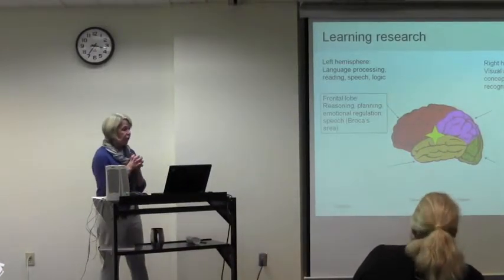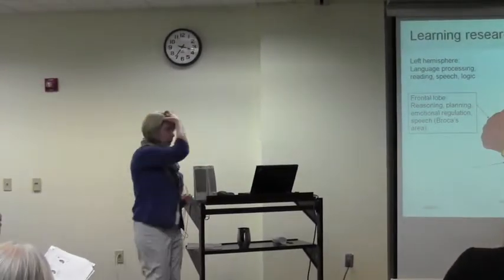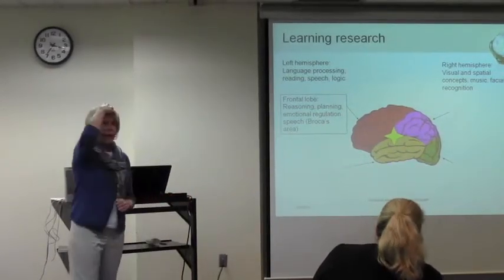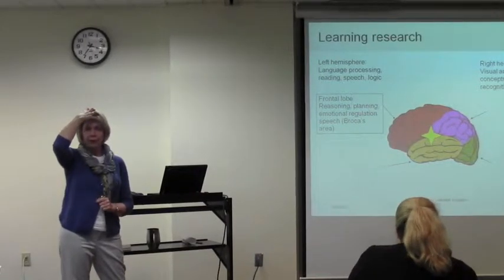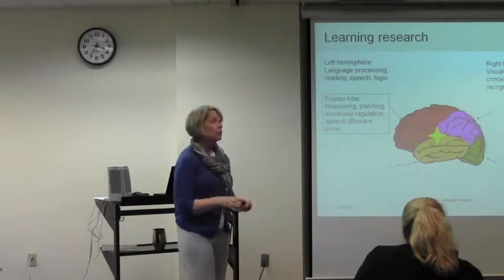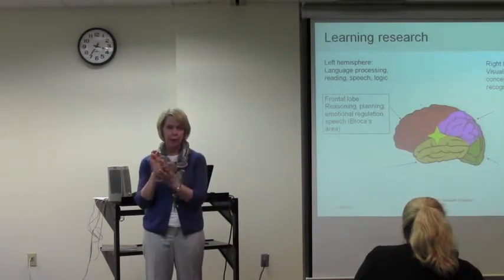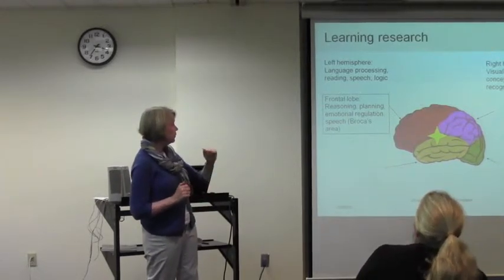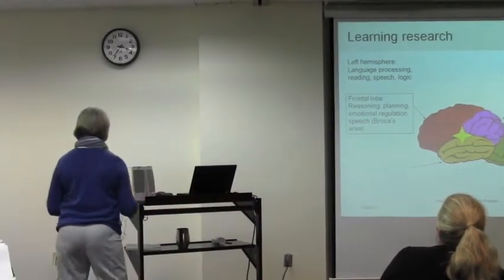And in the frontal lobe, which is this lobe right in the front of your brain, this is where reasoning, planning, and emotional regulation take place. This is largely where the executive functions are. And it's also an important area for speech, because one of the major language processing centers is in the left hemisphere toward the front — that's Broca's area.